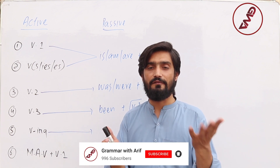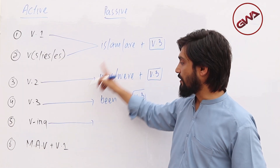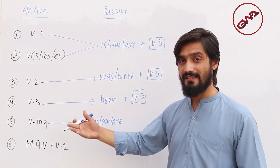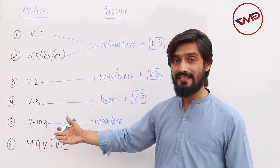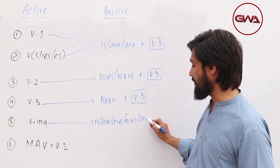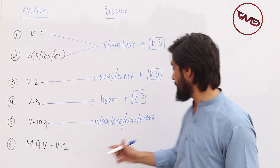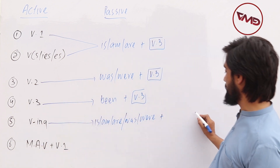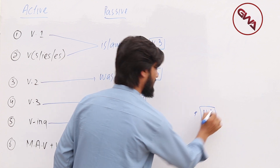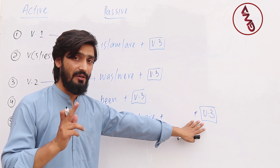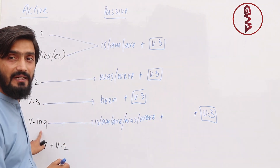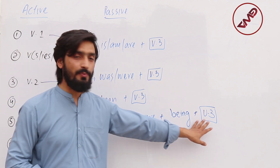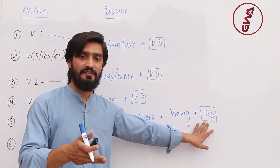For present continuous tense passive, we use is, am, or are; for past continuous tense passive, we use was or were. We remove the ing form and convert the verb into the third form, and we add the extra word 'being' — so 'being plus V3' signals the passive form of a continuous tense.